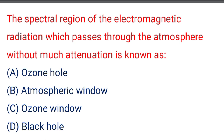Next question: the spectral region of the electromagnetic radiation which passes through the atmosphere without much attenuation is known as — option A: ozone hole, option B: atmospheric window, option C: ozone window, option D: black hole.